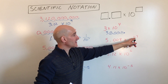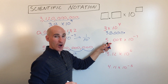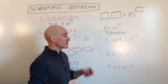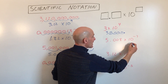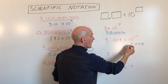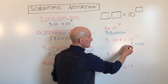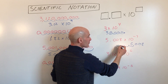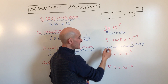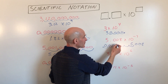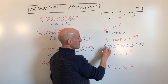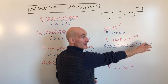This one has a negative 7 exponent, which tells us it's a really small number. We move the decimal point in 5.008 seven places to the left, filling in placeholder zeros, and get 0.0000005008.